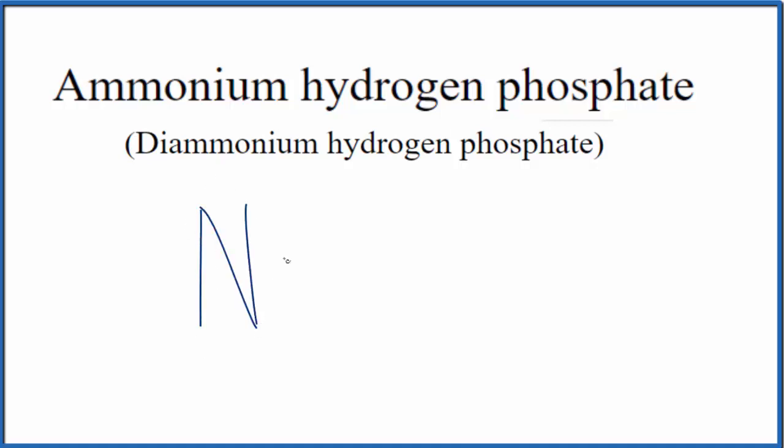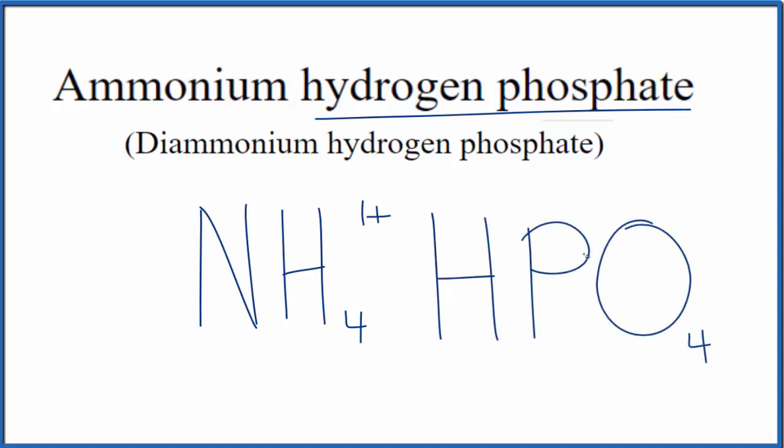It'd be NH4, and the ionic charge on the whole ion would be 1+. Hydrogen phosphate is another polyatomic ion you should be familiar with. It is HPO4, and the whole ion here has a charge of 2-.